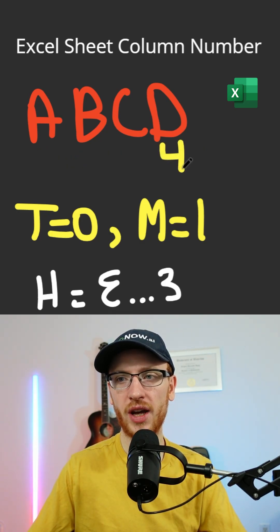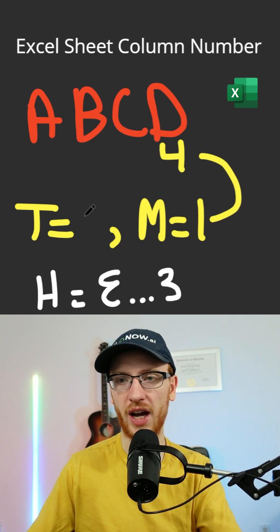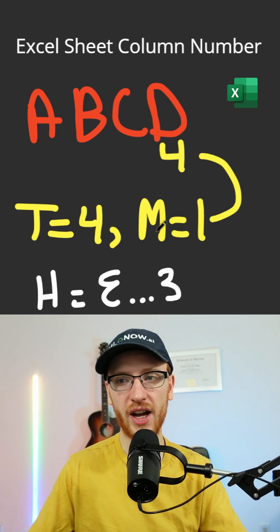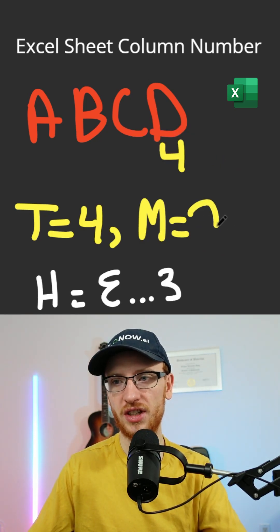Now at every step we get the value from the hash map and we multiply that by M. That gives 4, we're going to add 4 to our total, and then after that we need to multiply our multiplier by 26.